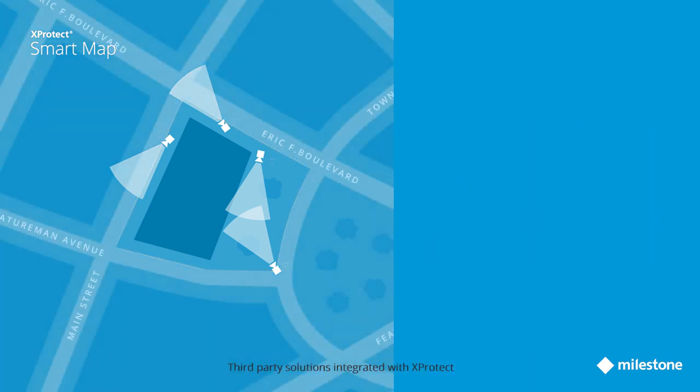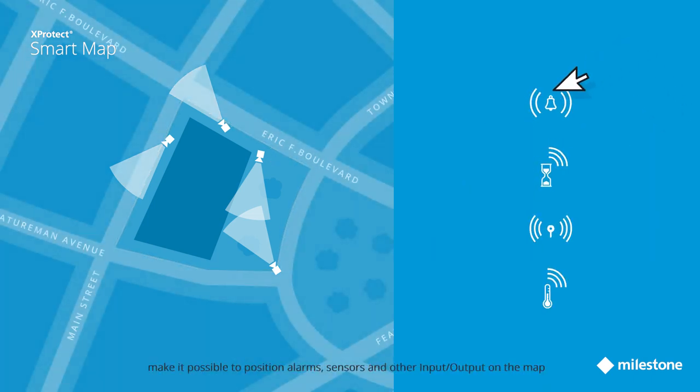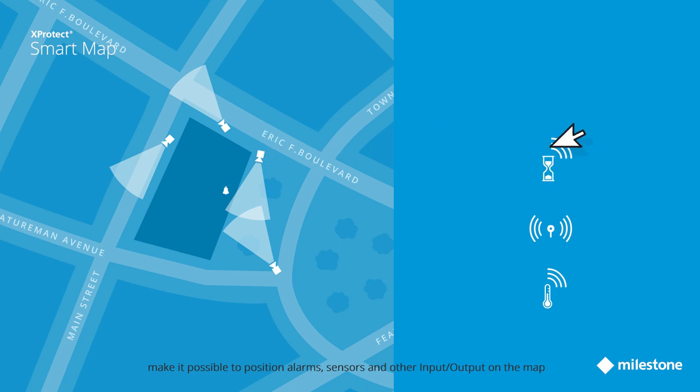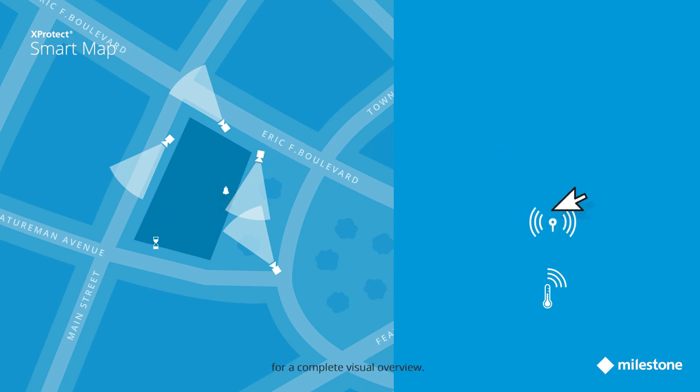Third-party solutions integrated with X-Protect make it possible to position alarms, sensors, and other input-output devices on the map for a complete visual overview.